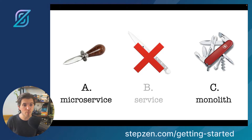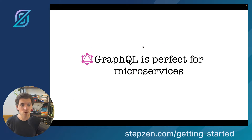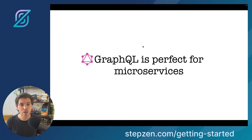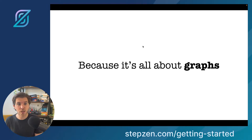So make sure if you have a microservice, it does one thing and it does that one thing very well. GraphQL is perfect for these microservices because GraphQL helps you give a graph to these boundaries. Because GraphQL is about graphs — it gives boundaries, graphs, schemas — it works together with your microservices.